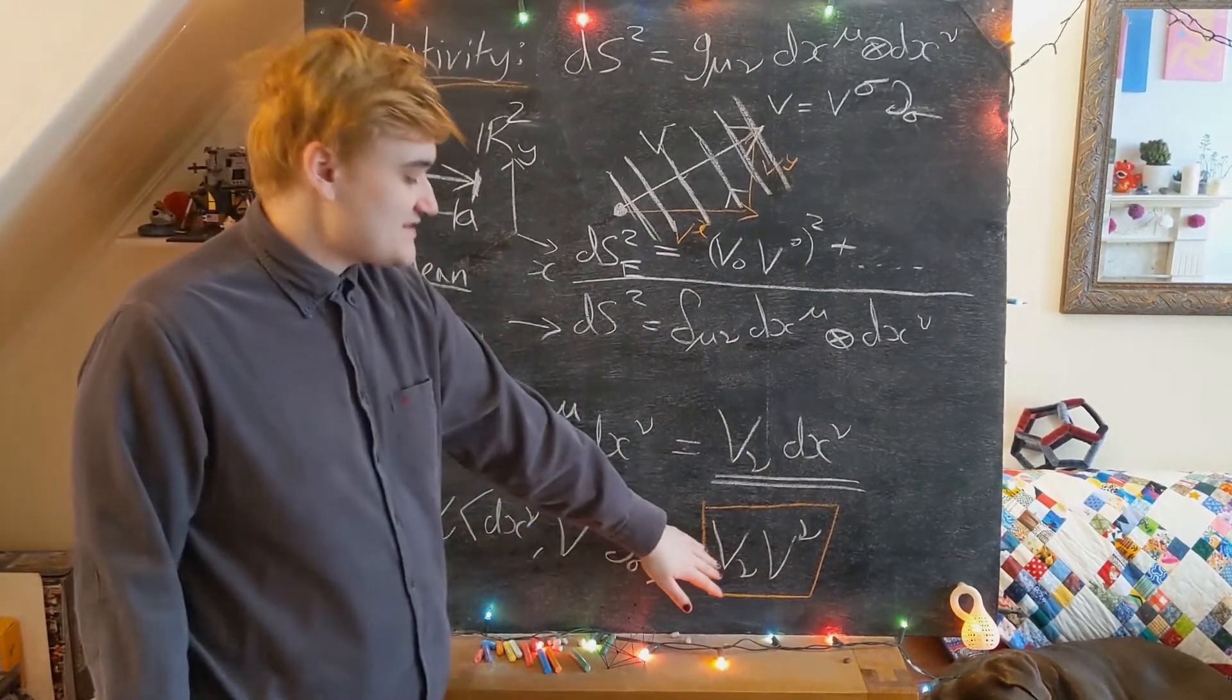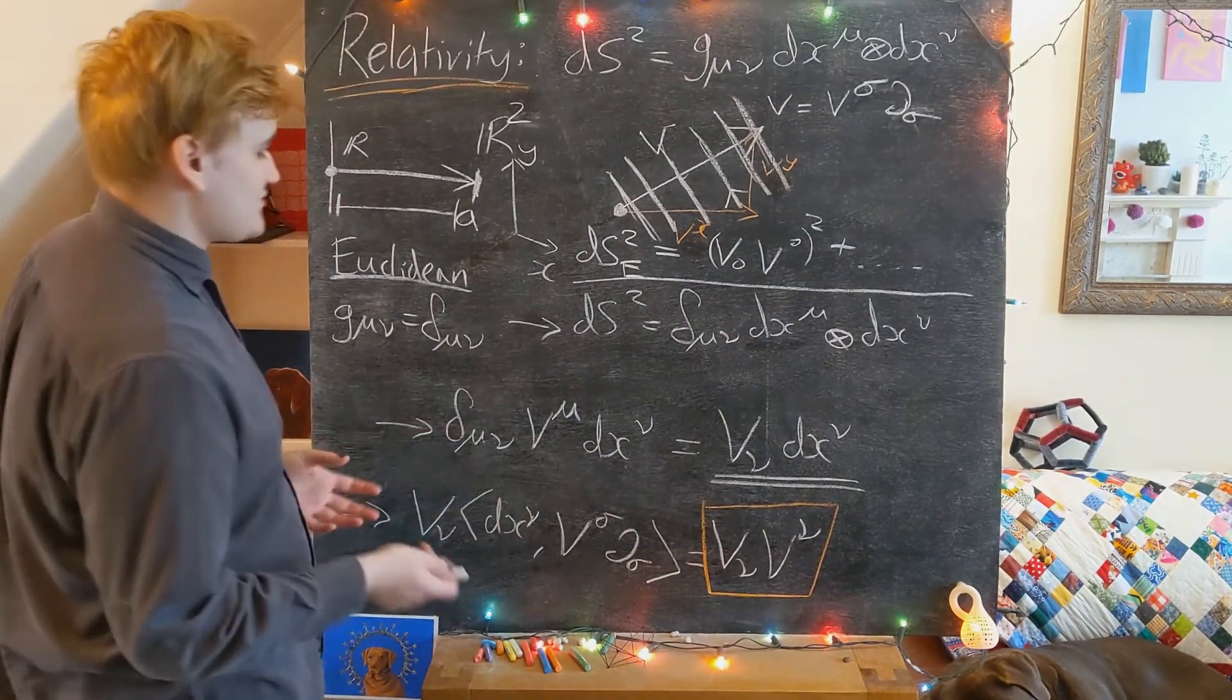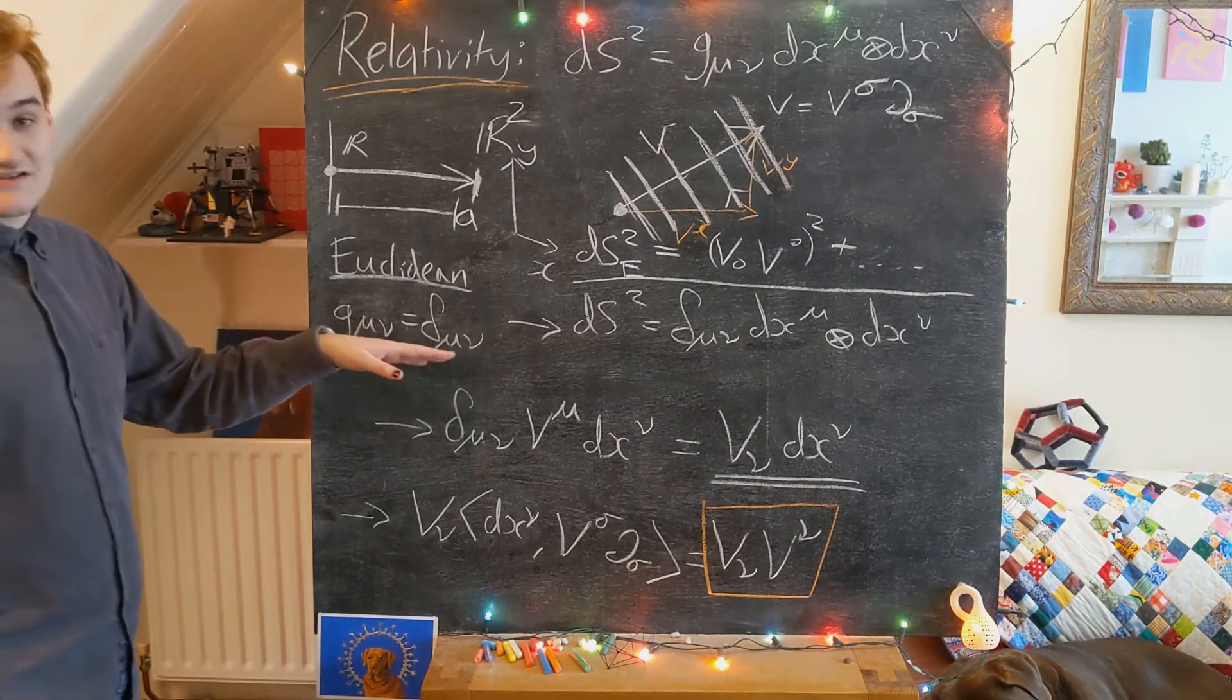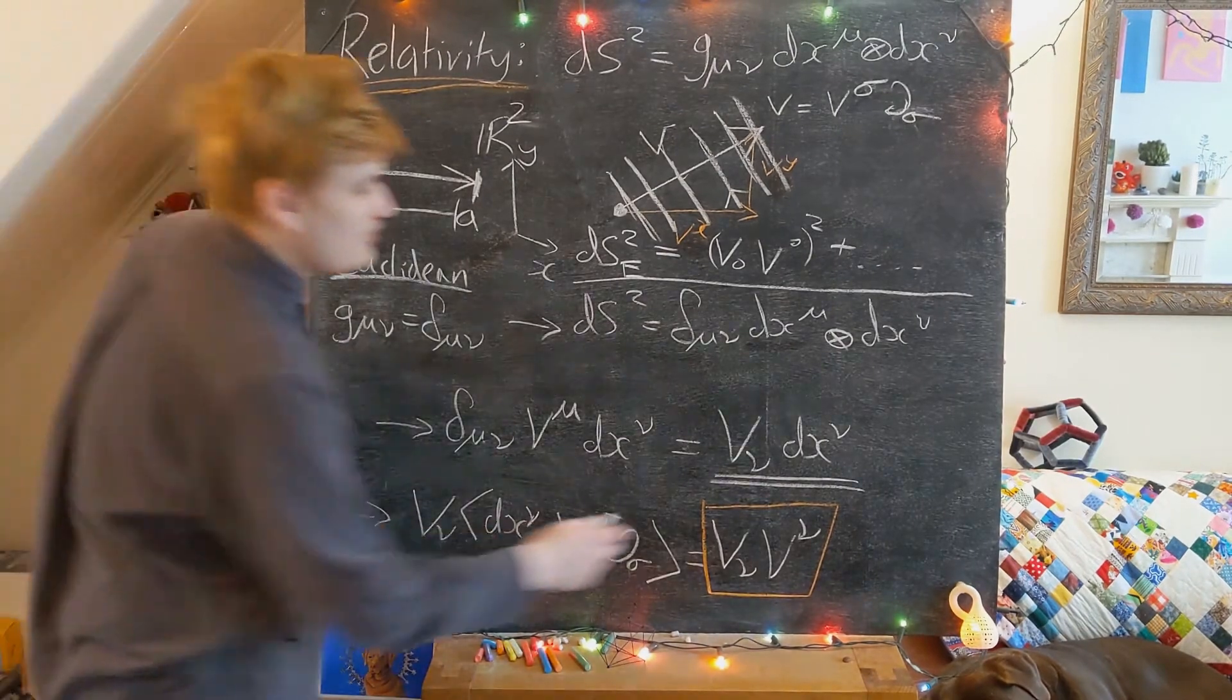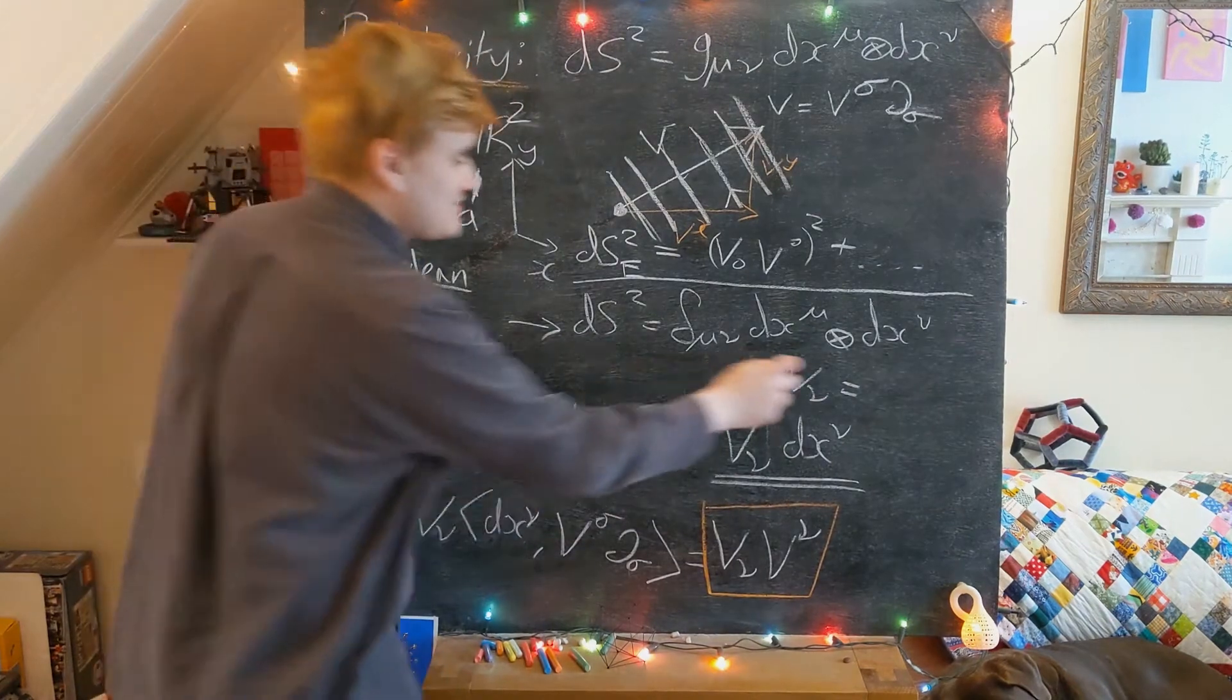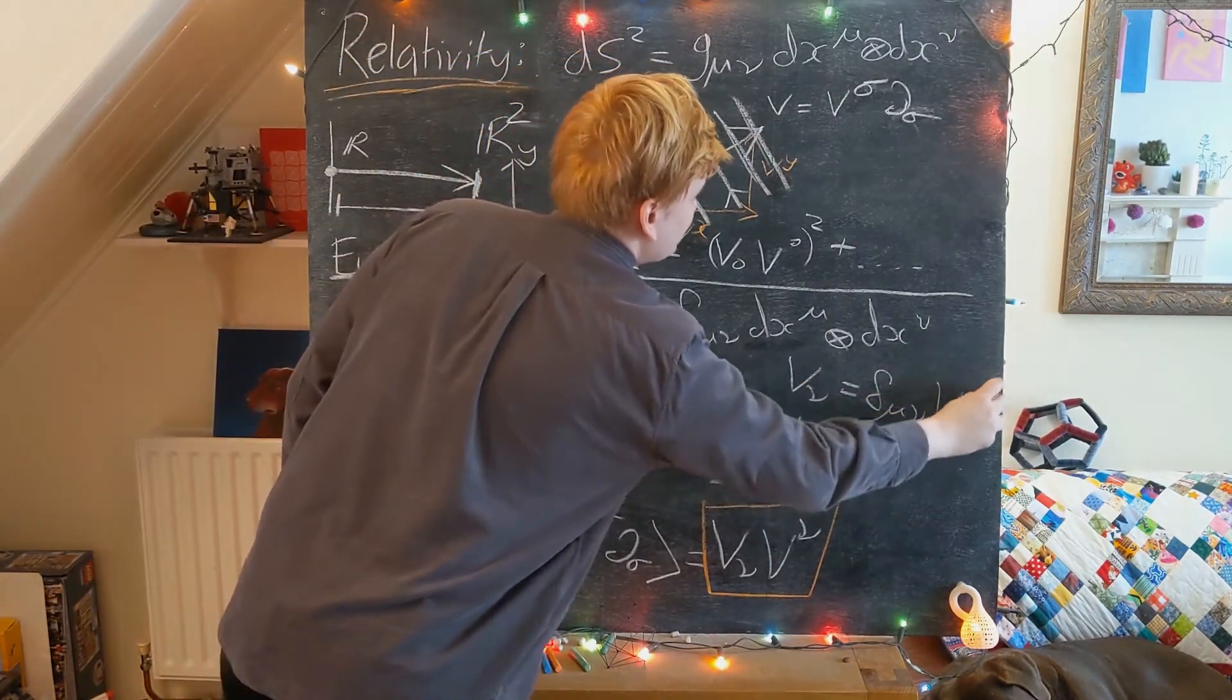This set of one-form components that we formed using the metric - well, we have to remember that in this simple Euclidean case, the metric is just the identity. So essentially when we form our one-form components by using the metric to lower a vector component, essentially all we're doing is we're just multiplying this by the identity matrix.